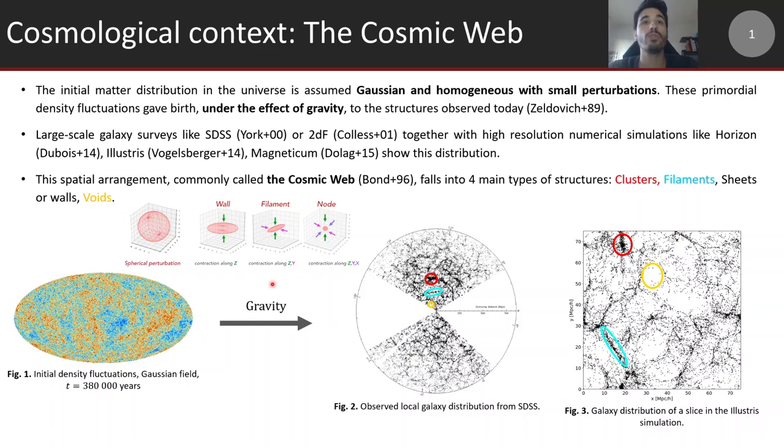Let me introduce the cosmological context and what is the cosmic web. In cosmology we assume that the initial density fluctuations are Gaussianly distributed and homogeneous with small spherical perturbations that evolved through time and gravity to the structures observed today in large sky galaxy surveys like Sloan Digital Sky Survey or in numerical simulations like the Illustrious simulation.